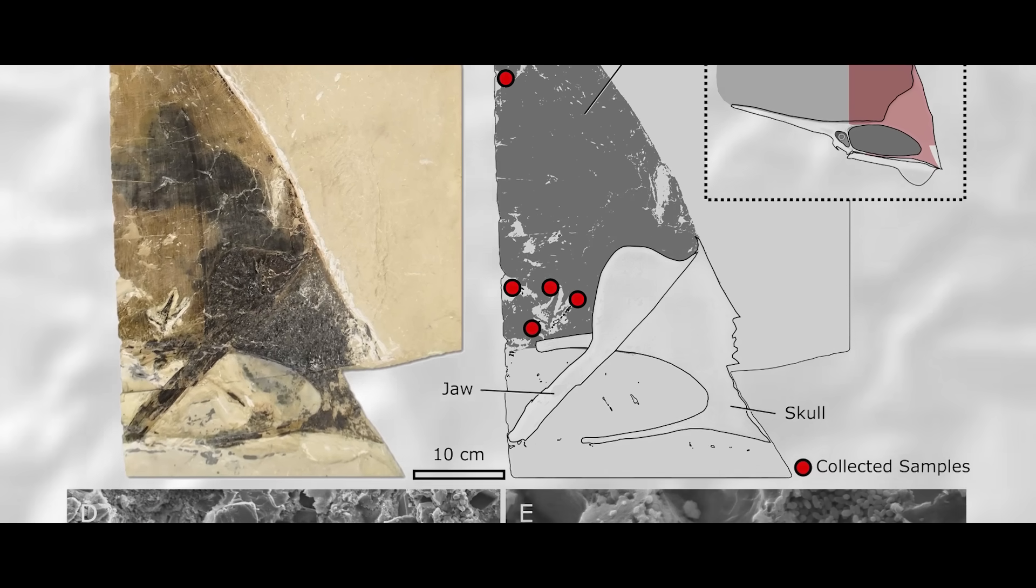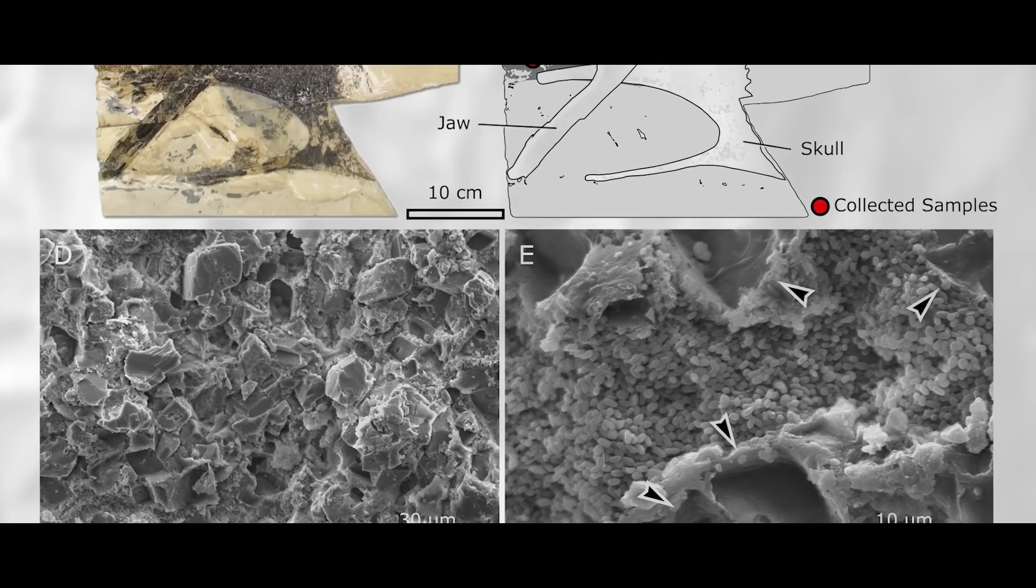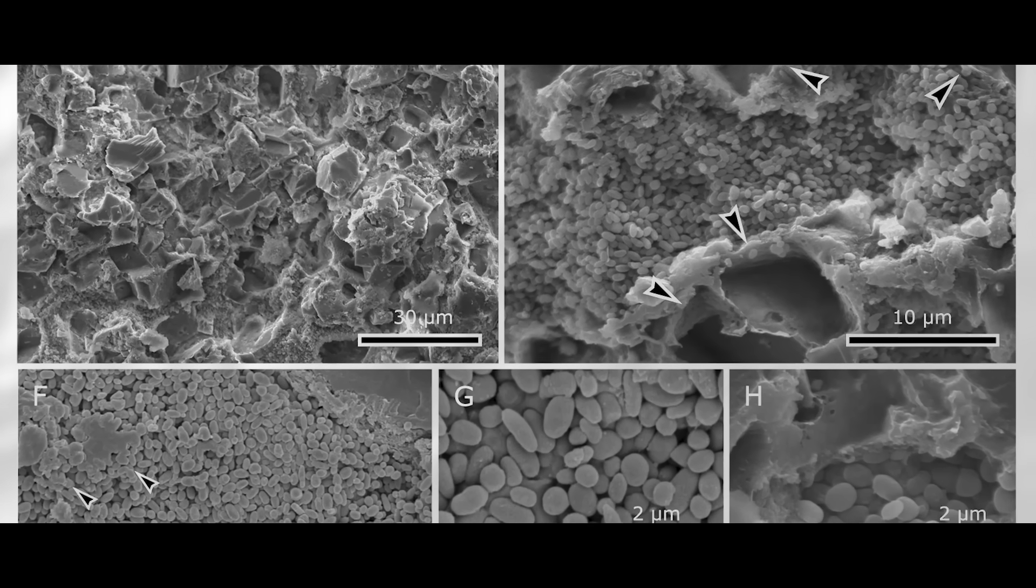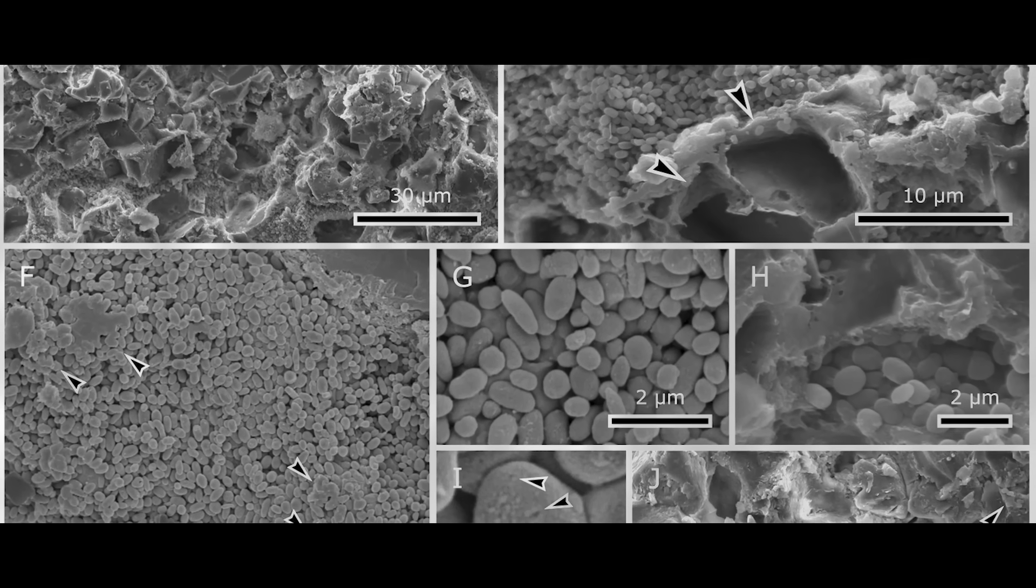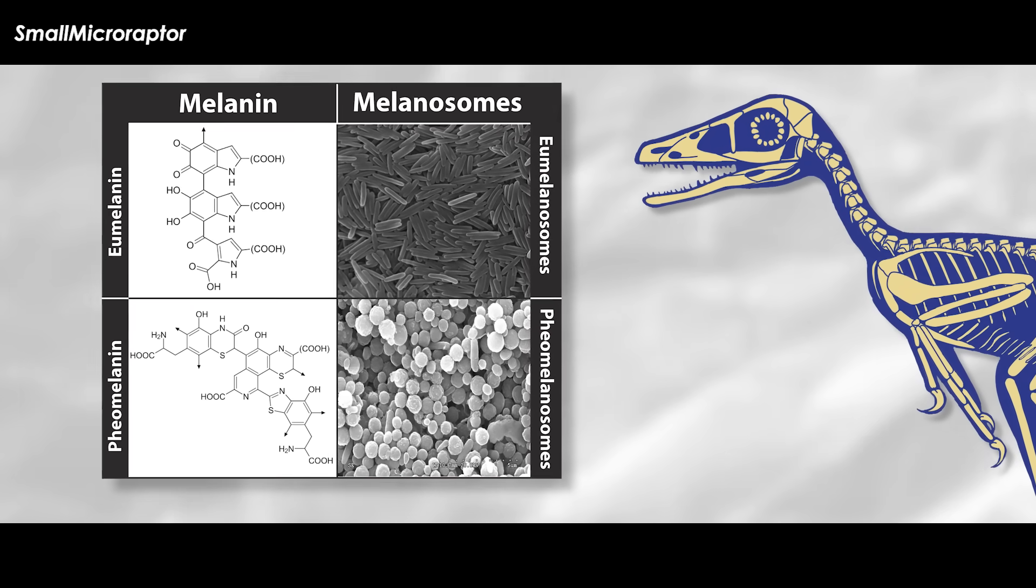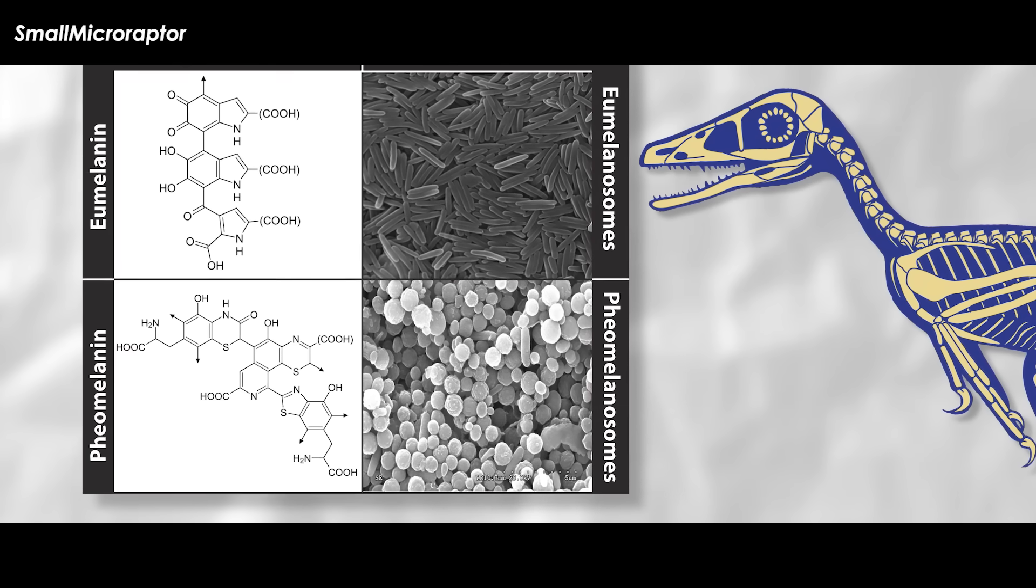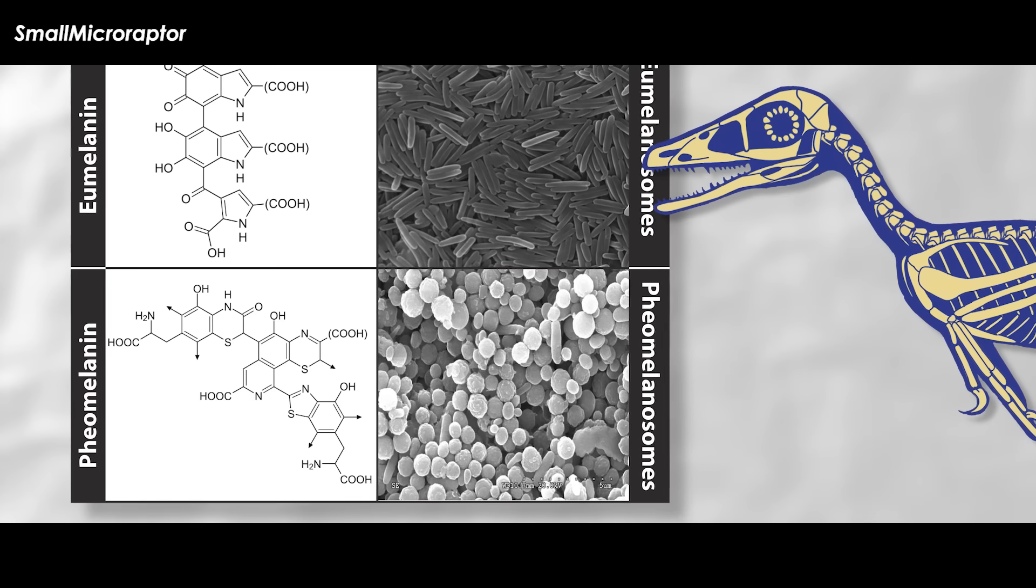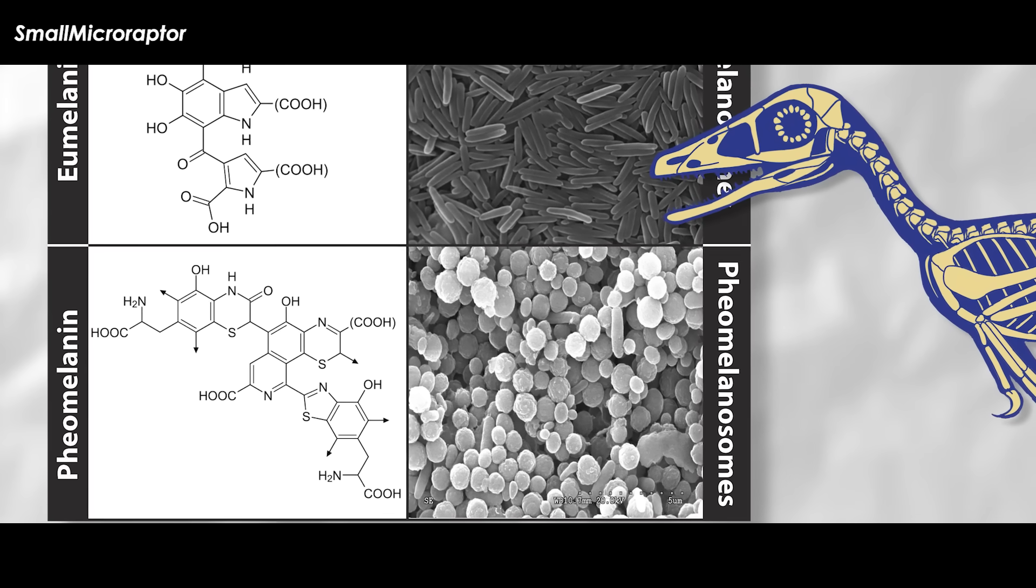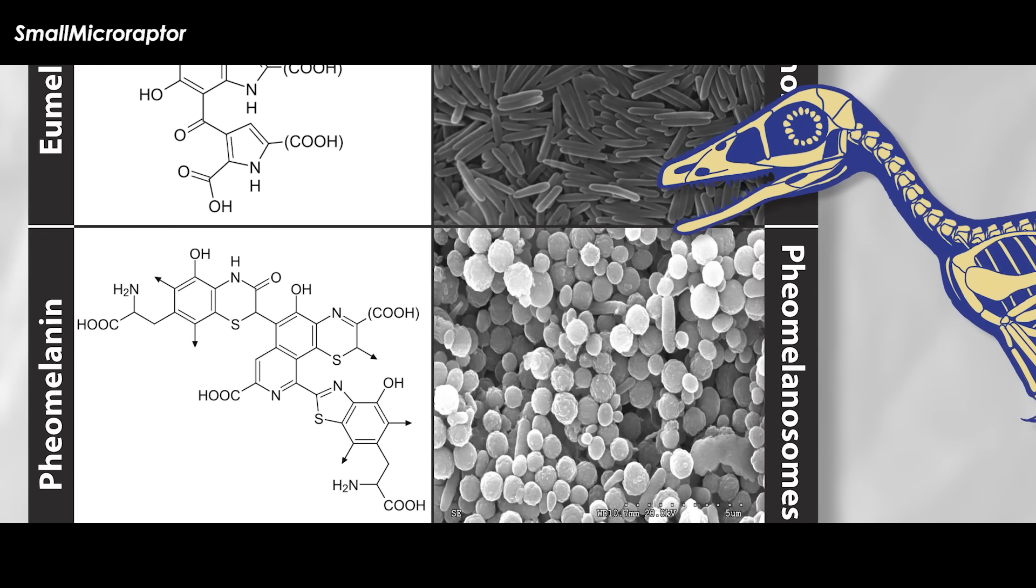Melanin-based coloration is the most prevalent source of coloration amongst vertebrates, and the best understood with regard to how it preserves in the fossil record and how to find them in fossils. Two distinct chemical varieties exist amongst vertebrates, which are eumelanin and phaomelanin. Eumelanin-rich melanosomes are oblate and produce shades of black, whereas phaomelanin-rich melanosomes are smaller and ovoid in shape and produce rufous to gingery brown colors. A correlation between color and shape enables the use of statistical methods to predict fossil color using a data set of modern melanosome measurements.